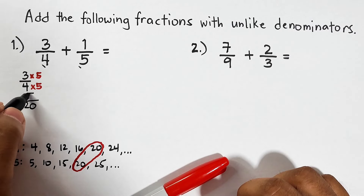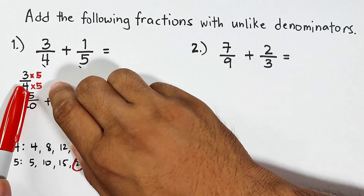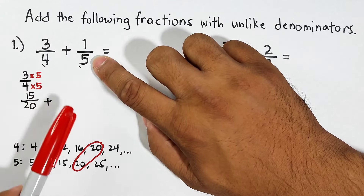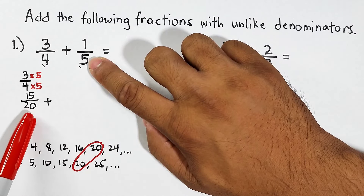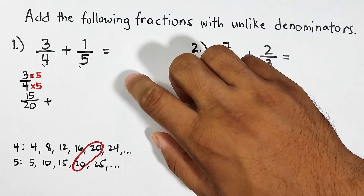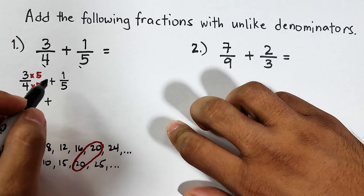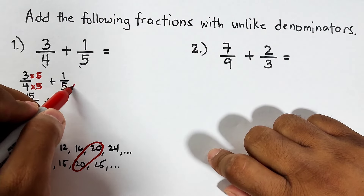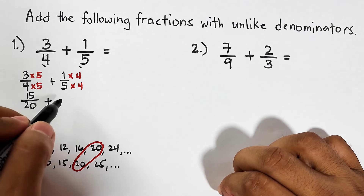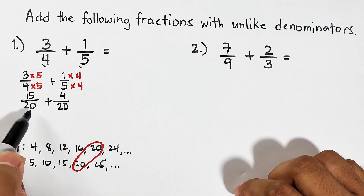This denominator will become twenty and the numerator becomes three times five, which is fifteen. Now for the second fraction, our target is to make the denominator twenty as well. We multiply one over five by four over four, so it becomes one times four which is four, over five times four which is twenty. Notice we now have the same denominator.